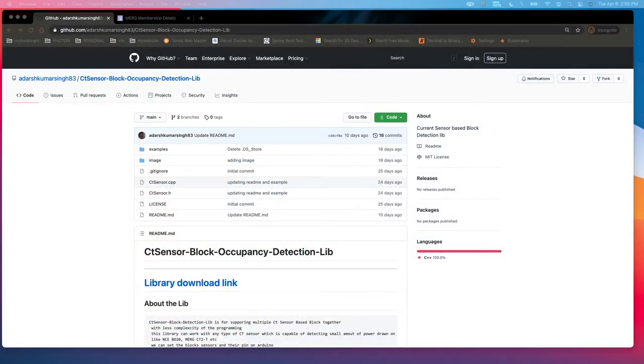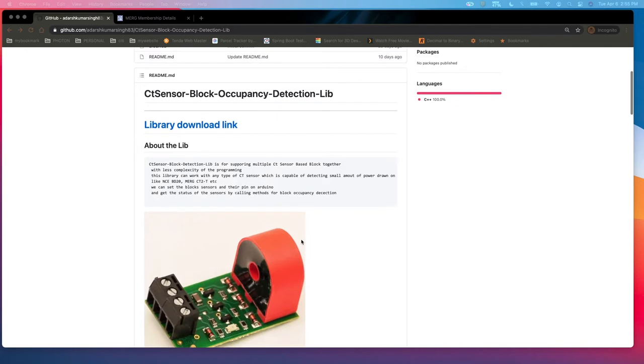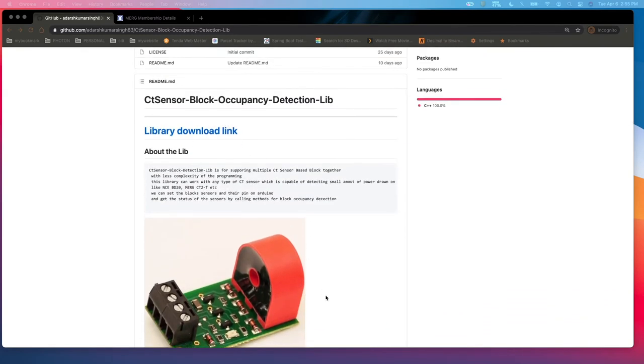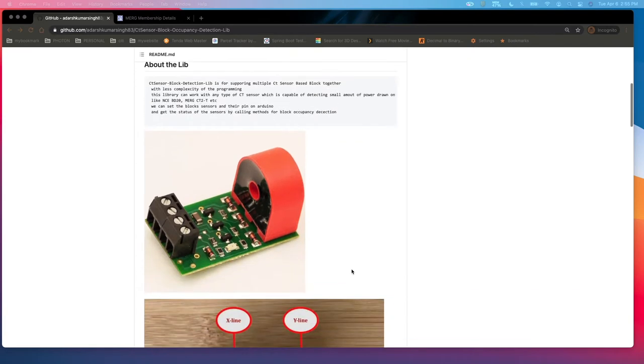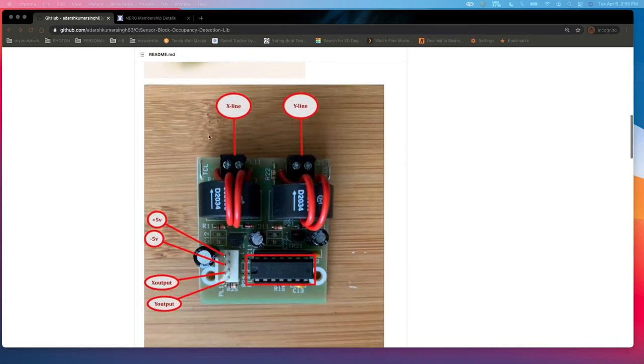For this, we have to do programming on Arduino. I've already built an API. You can go to github.com/adashkumarsingh83/ct-sensor-block-occupancy-detection-library. If you come into this, you can see this library has a download link. This GitHub page has a download link for downloading the library. This will work with NCBD20, which is shown in the picture, and the MERG circuitry which I've shown just now for X and Y.